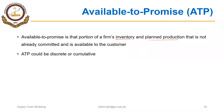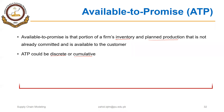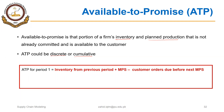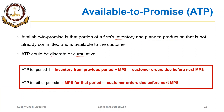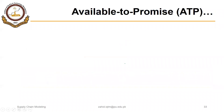ATP could be discrete or cumulative — it has two types: discrete ATP or cumulative ATP. ATP for period 1 is inventory from the previous period plus MPS minus customer orders due before the next MPS. ATP for other periods (period 2, 3, and so on) is MPS for that period minus customer orders due before the next MPS.